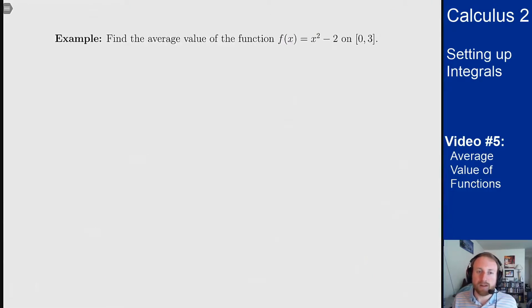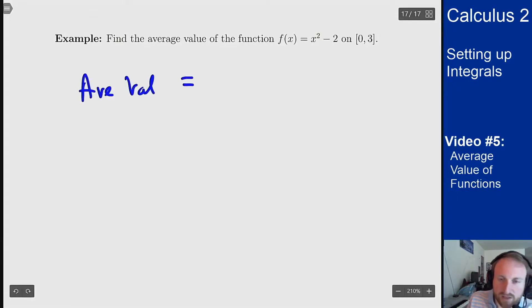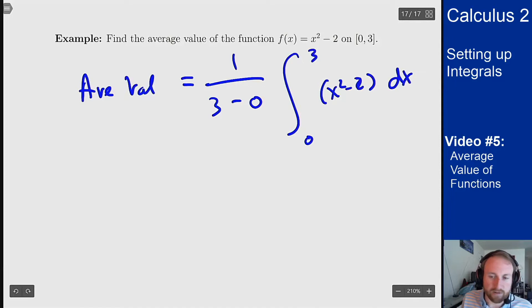All right, so now a brief example. Find the average value of the function f of x equals x squared minus 2 on the interval from 0 to 3. This is just a straightforward calculation here. The average value should be 1 over 3 minus 0, the integral from 0 to 3, x squared minus 2 dx. Just plugging right into the form for what it means to be the average value of this function.